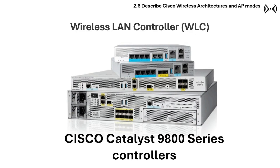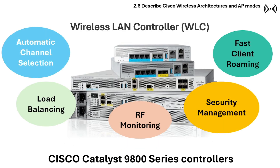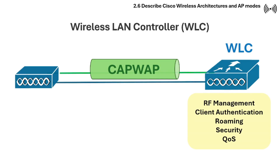Cisco has several different WLC models, and the latest generation of controllers are the Catalyst 9800 series controllers that run on IOS XE. The wireless LAN controller solves many of the scaling problems seen in traditional autonomous WLAN architecture, including automatic channel selection, fast client roaming, load balancing, RF monitoring, and security management. WLCs also handle tasks like roaming and radio resource management, and act as termination points for CAPWAP tunnels.